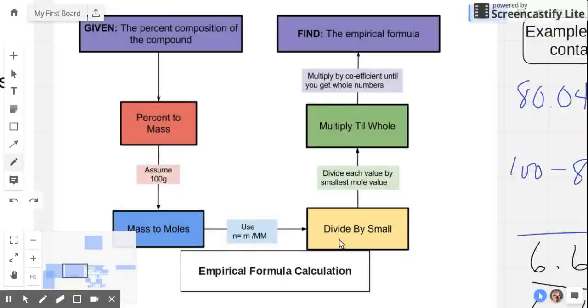The moment we get the mole answers, we locate or determine what is the smaller or the smallest value and we divide all the values by that small value. Then we should generate a whole number answer. But for this tutorial, we have to know what are we going to do if it's not going to be a whole number?